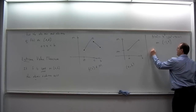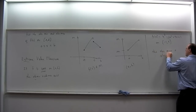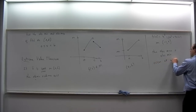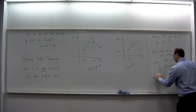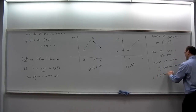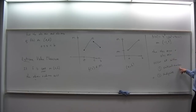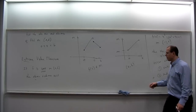The absolute max and the absolute min occur at one of two places: either critical numbers or endpoints. In any combination — the min might occur at an endpoint and the max at a critical number, or vice versa, or they might both occur at critical numbers, or both at endpoints. In fact, the max or min value could occur at more than one place, such as at both a critical number and an endpoint.